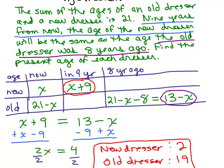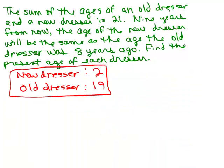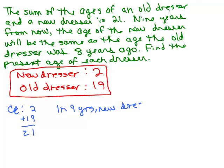Of course we're going to check our answers. First, 2 and 19 does add up to 21 — that satisfies the first sentence. Now, nine years from now, the age of the new dresser: right now it's 2, so in 9 years you add 9, and it would be 11. It says that will be the same as the old dresser was 8 years ago.